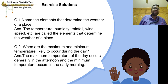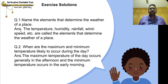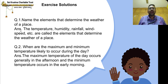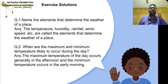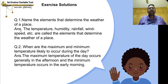When are the maximum and minimum temperatures likely to occur during the day? The maximum temperature of the day occurs generally in the afternoon, and the minimum temperature occurs in the early morning.